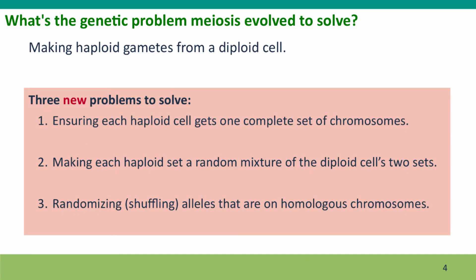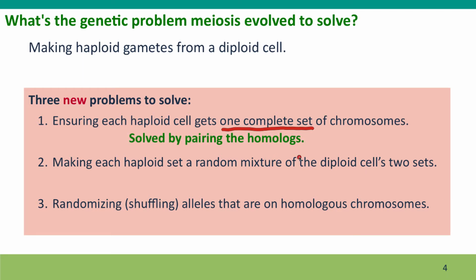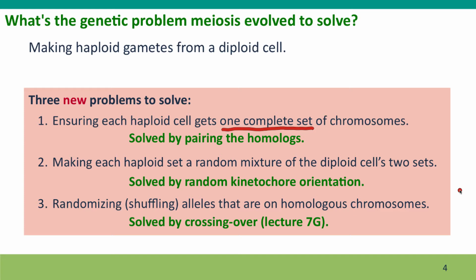This creates three new problems that meiosis has to solve. The first is ensuring each haploid cell gets one complete set — not incomplete sets, not too few chromosomes or too many. The second is making each haploid set a randomized mixture of the diploid cell's two sets. The third is shuffling alleles that are on homologous chromosomes. The first problem is solved by pairing the homologues. The second is solved by the random way kinetochores point in the cell, so you can't predict which chromosome goes to which pole. And the third is solved by a process called crossing over, which we'll talk about in Lecture 7.